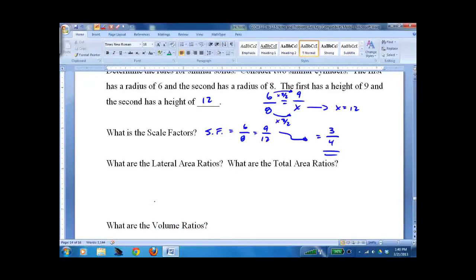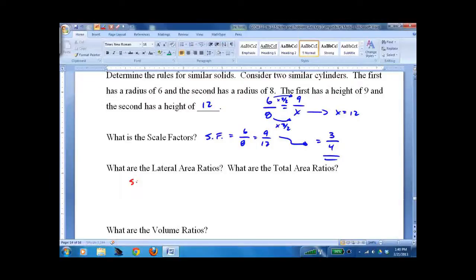So let's figure out lateral area ratio. So the smaller one, we had R equals 6 and H equals 9. Lateral area equals 9 times 12 pi, 108 pi. Total area equals 180 pi.